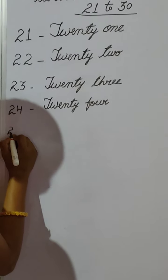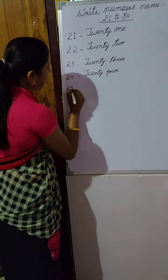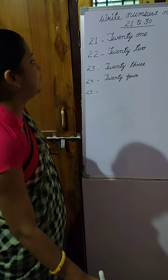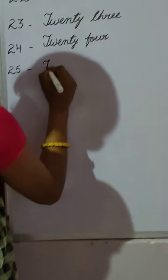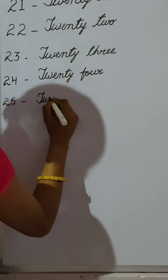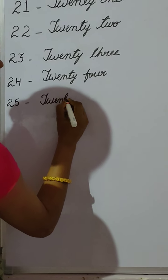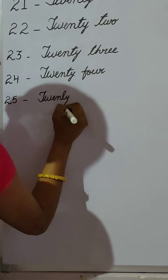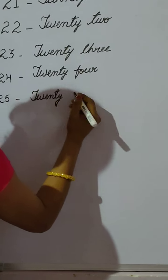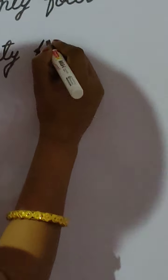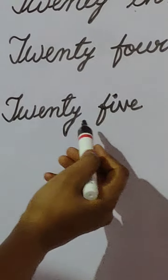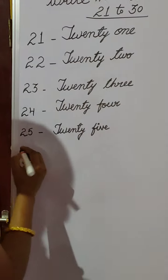25. We have to write the spelling of 25. T, W, E, N, T, Y — 20. Then 5 — F, I, V, E. So 25 is TWENTY — T, W, E, N, T, Y — then FIVE — F, I, V, E — 5. TWENTY-FIVE. 25.